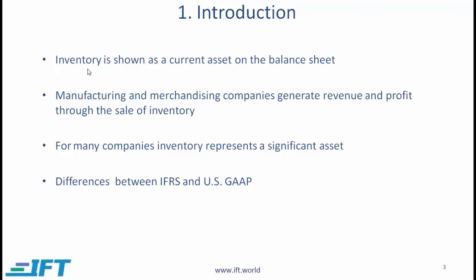As we have discussed before, inventory is shown as a current asset on the balance sheet for manufacturing and merchandising companies. Revenue and profit is generated through the sale of inventory and for many companies, inventory represents a significant asset. With regards to inventory accounting, there are a few important differences between IFRS and US GAAP, and those differences will be highlighted in this reading.